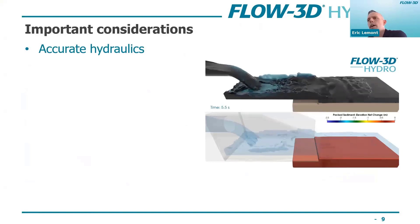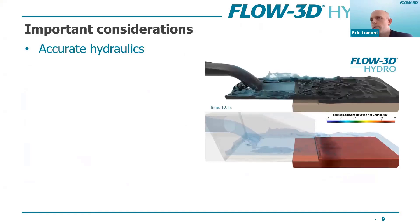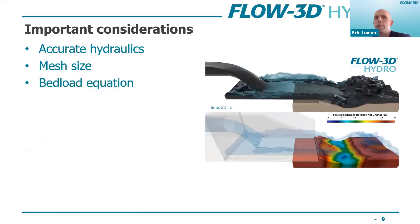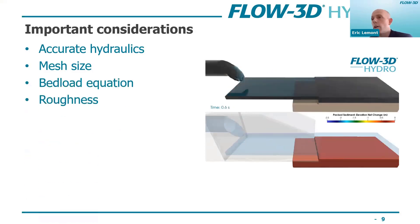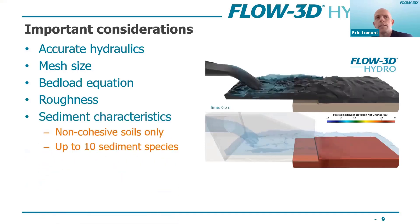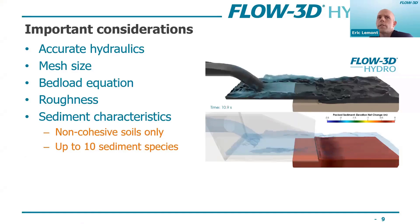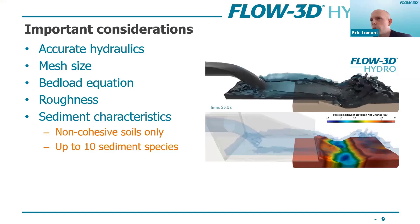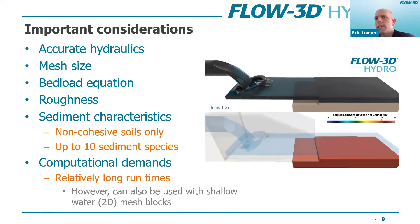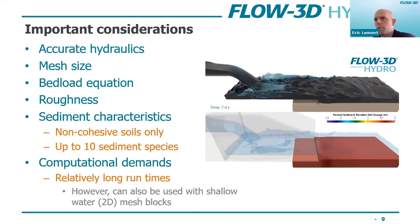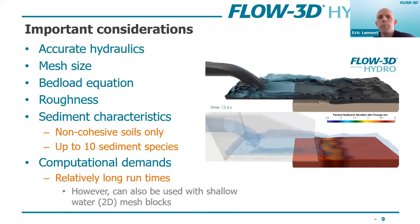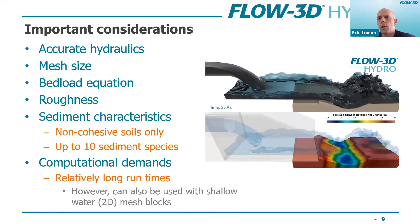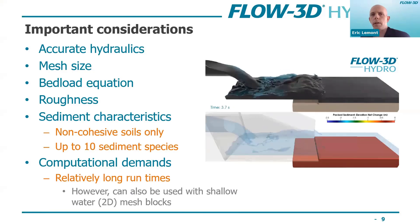Key factors that impact results include: accurate hydraulics feeding accurate shear stress values; mesh size, which we'll show in the validation, can have a big impact; different bed load equations you can choose from; and roughness, which will impact your shear stress. You can have up to 10 different sediment species, and the current limitation is that it's only non-cohesive soils. Run times can be relatively longer since sediment transport problems often look at long durations, though it does work with the shallow water mesh to reduce run times.